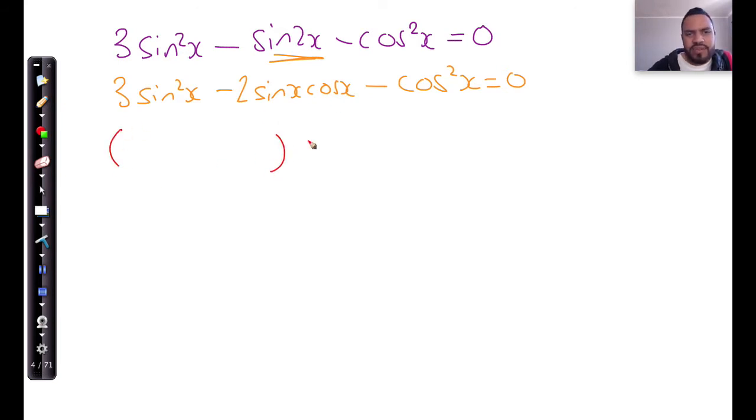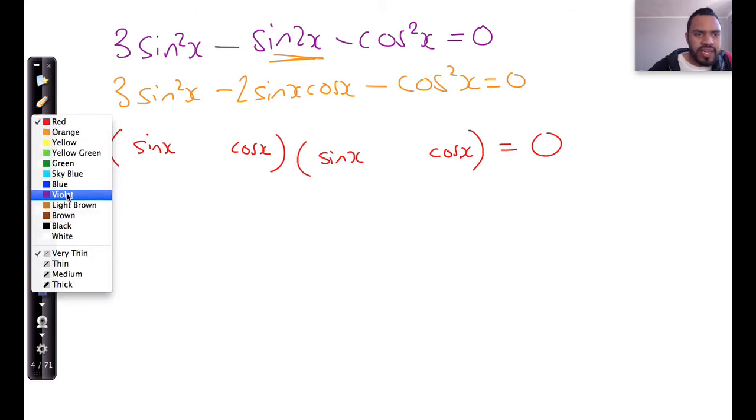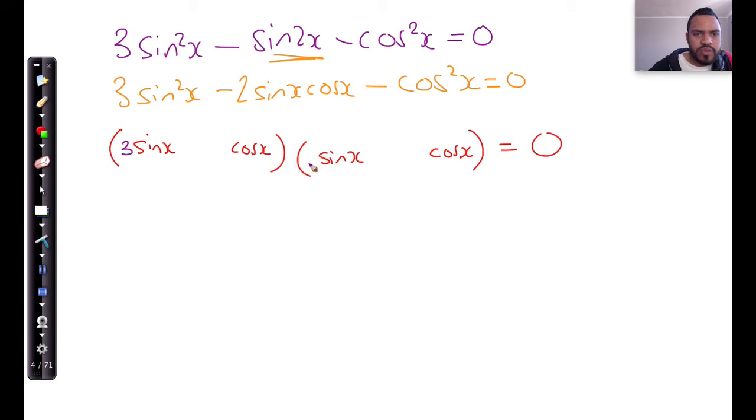The first factor being sine x and the second one being cos x. So this is going to be sine x and cos x. When you factorize this, this has to be, this will likely be 3 and this will be 1, because 3 times 1 gives you 3 sine squared x. And this will be cos x and this will be cos x. One of them has to be positive, the other negative.